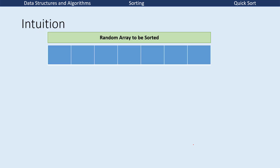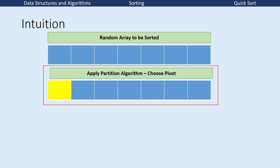Consider that we have an array in blue color. This is a random number and we want to sort it. First of all, we have a partition algorithm. Quick sort chooses one element as a pivot. Generally, the default algorithm picks the leftmost element as the pivot.